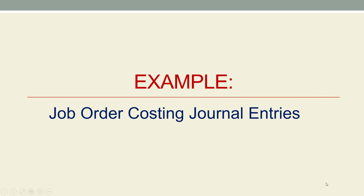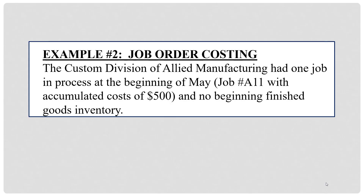Let's work an example to prepare the journal entries in a job order costing system. The Custom Division of Allied Manufacturing had one job in process at the beginning of May — Job A11 with accumulated cost of $500 and no beginning finished goods inventory. This $500 assigned to Job A11 is made up of direct material used, direct labor, and overhead applied. We don't know the individual amounts, but we know it adds up to $500. That was incurred last period.